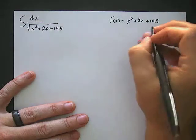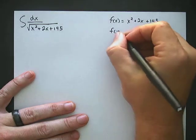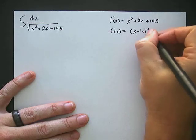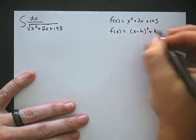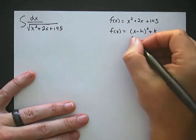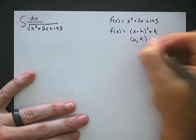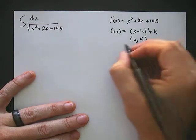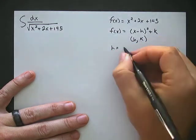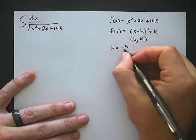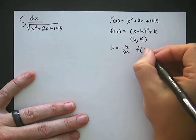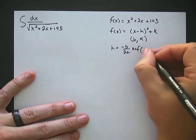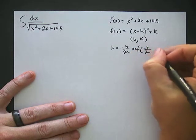We want to put it in the form x minus h squared plus k. So we need to figure out h and k, which is the vertex. The quick way of finding the vertex is negative b over 2a, and k is equal to f of negative b over 2a.